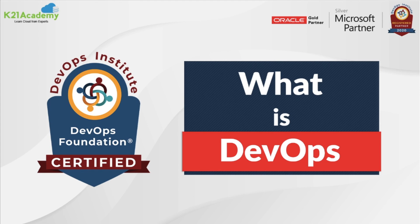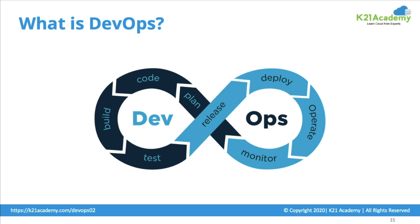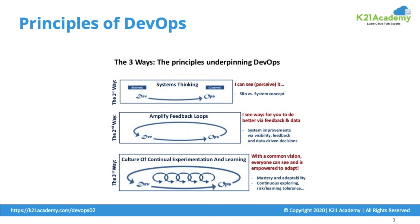DevOps is a set of practices that aims to shorten the system development life cycle and provide continuous delivery with high software quality. So what exactly is DevOps and why has it gained so much traction in the IT industry? How does DevOps combine software development and IT operations? What are the principles of DevOps that lie in the three ways? In this video, we are going to cover it all.